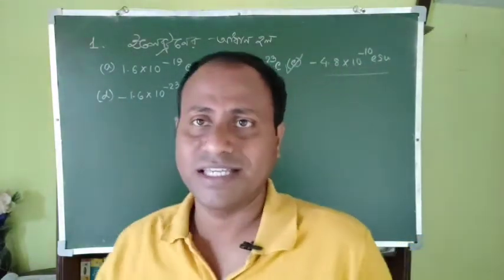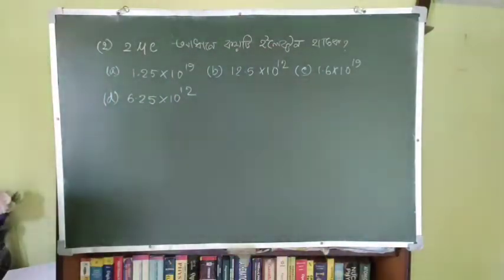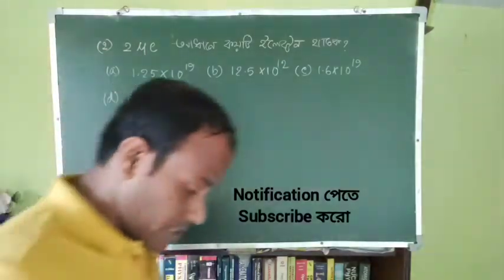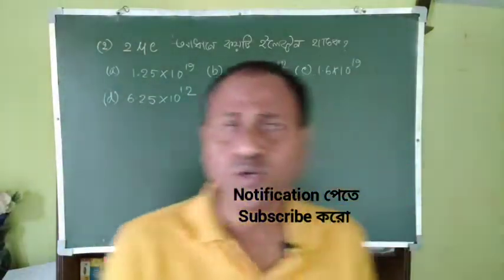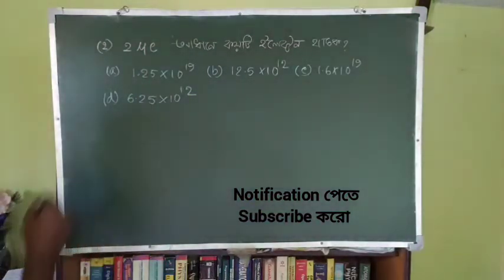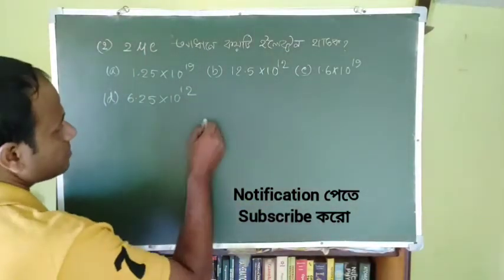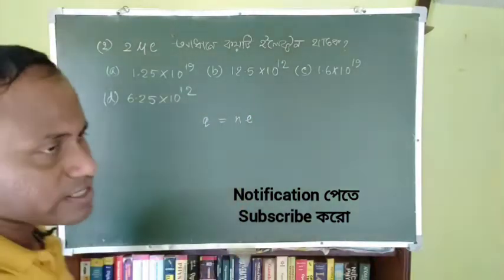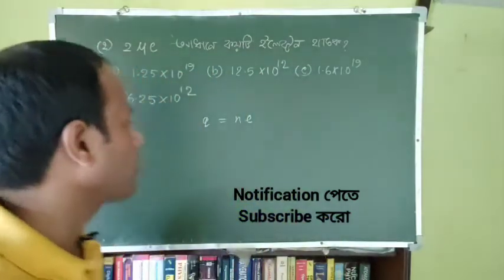The next question involves micro-coulombs. We use the quantization of charge formula: Q = n × e. This is about the quantization of charge concept applied to find the number of electrons corresponding to a given charge in micro-coulombs.